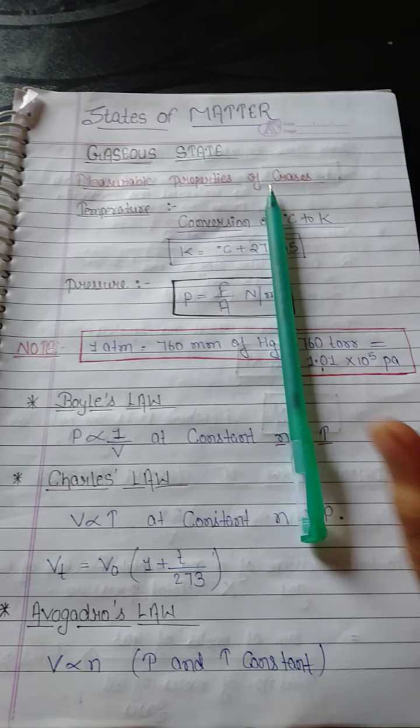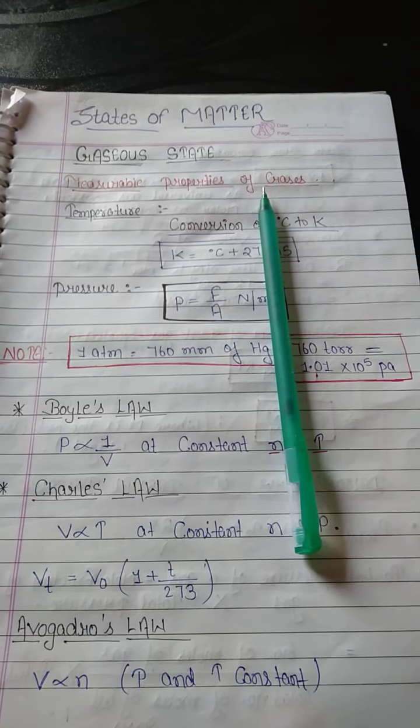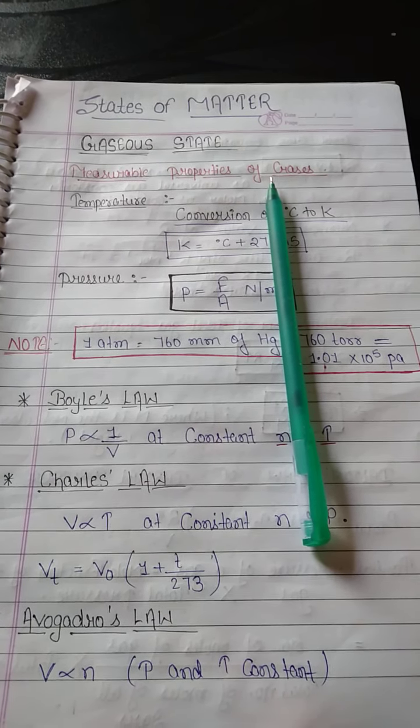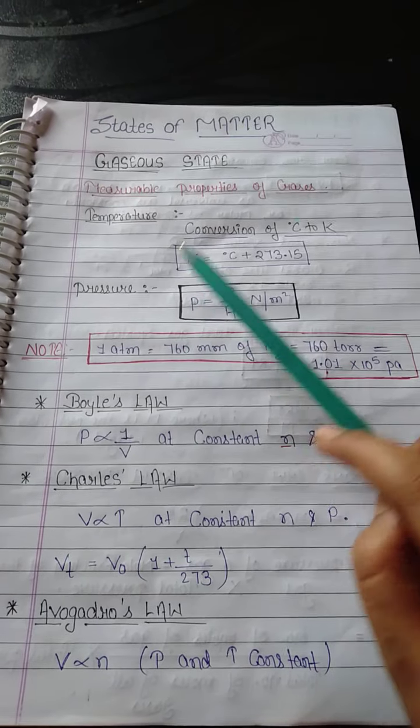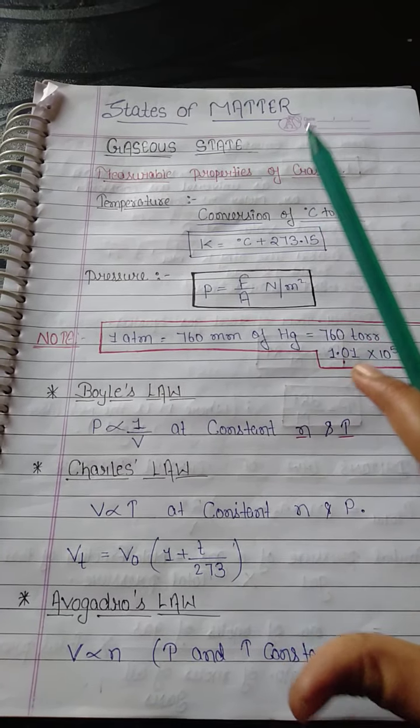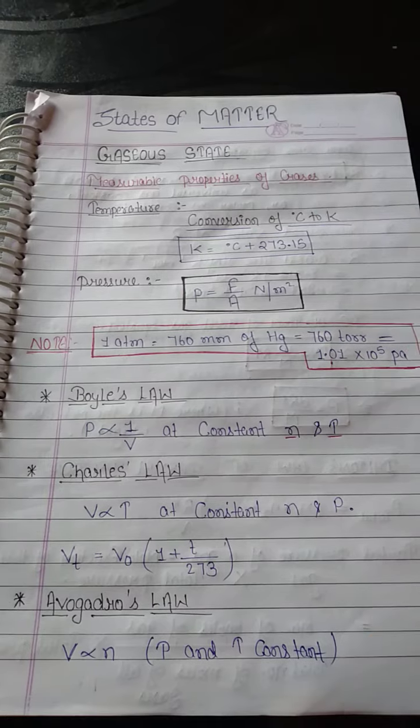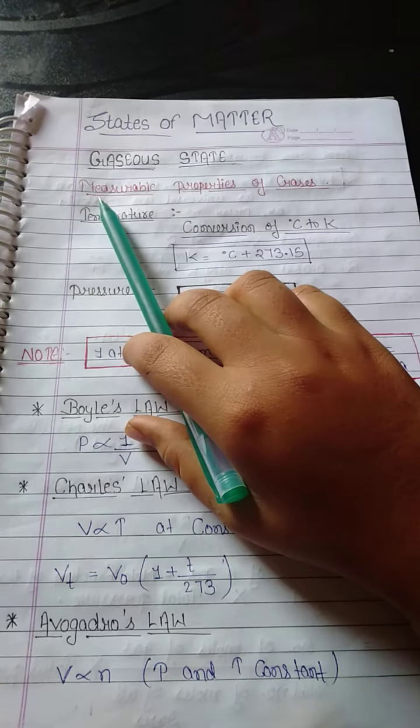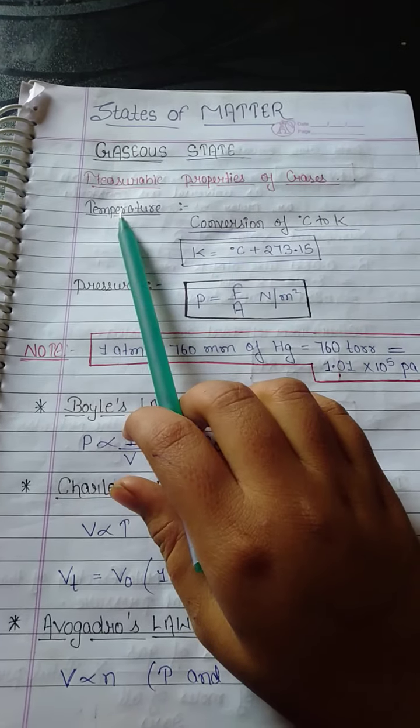After that I will deal with the liquid state and the solid state, but now my first topic is the gaseous state. All important formulas of gaseous state are here. Now starting with temperature, measurable properties of gases, temperature conversion of degree Celsius to Kelvin.